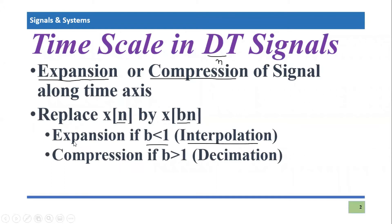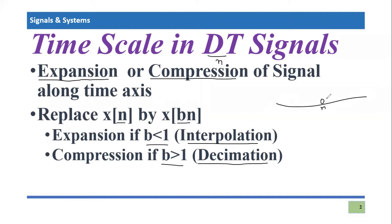If you are compressing a discrete time signal, you are scaling the time domain variable with a factor greater than one. In discrete time domain this process is also known as decimation — meaning you are going to decimate certain time bins. Here n is a variable that may have bin numbers such as zero, one, two, minus one, minus two. Decimation means we truncate certain bin numbers.